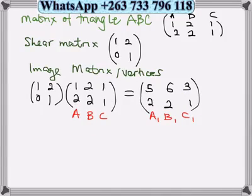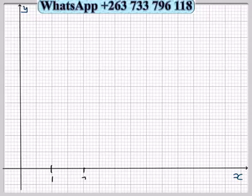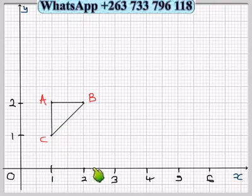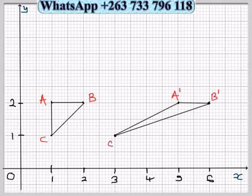Let's draw it on a Cartesian plane. I will label this is my x-axis, this is my y-axis. These are my points: A is (1,2), B is (2,2), C is (1,1). After the shear transformation parallel to the x-axis, we plot A1 at (5,2), B1 at (6,2), then C1 at (3,1).